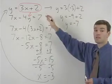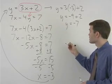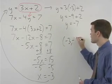So the solution to this system of equations is negative 3, negative 7.